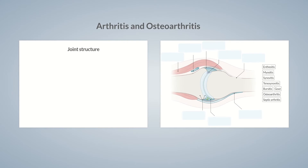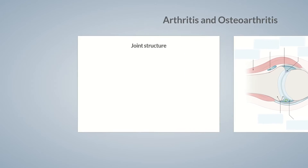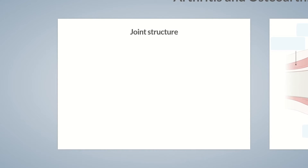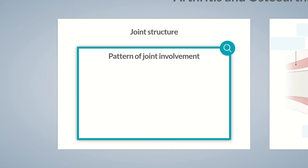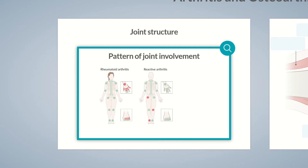Arthritis and osteoarthritis. Rheumatic diseases often cause joint pain and have different patterns of joint involvement. These can be used to differentiate the different types of disorders. For example, rheumatoid arthritis usually affects multiple smaller joints, whereas reactive arthritis involves fewer, yet larger joints.